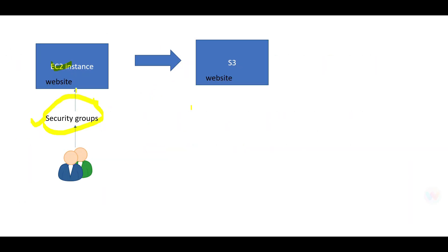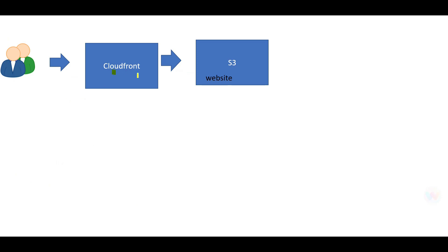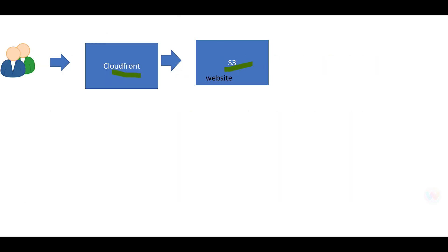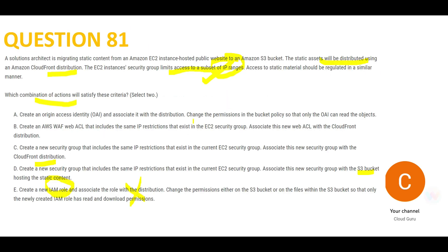Options C and D are similar — they suggest using a security group for CloudFront distribution and for S3 with the same IP restrictions. That would only work if your origin is an ELB or EC2 instance. Our origin is neither of those, so both of these options are wrong.